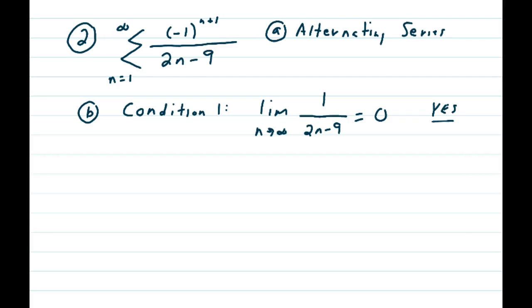It's one of the more difficult tests to use because it requires a little bit more work than the others. So part A, it's an alternating series, we see the alternator, negative 1 to the n plus 1, and we have three conditions to check for convergence.